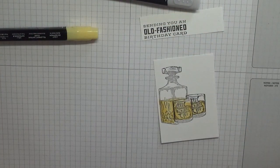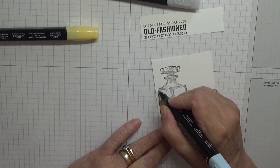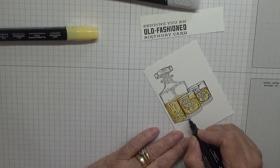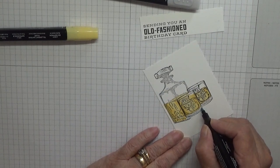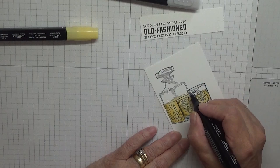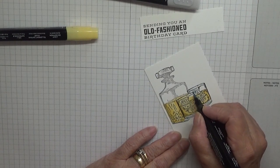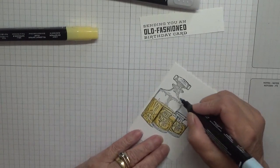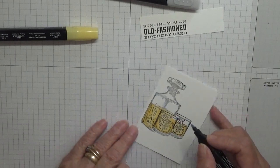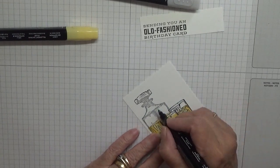With the Balmy Blue, I just went round, just a thin line round the glass, just so it's barely there.